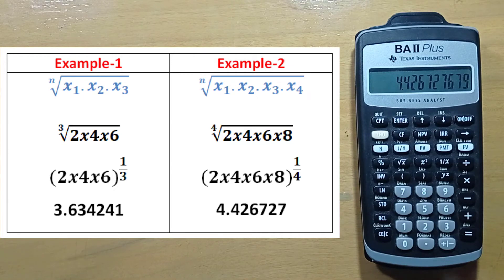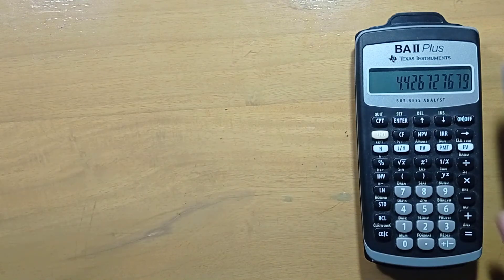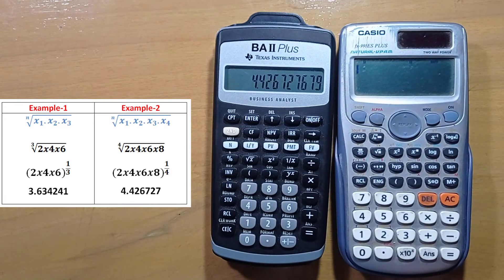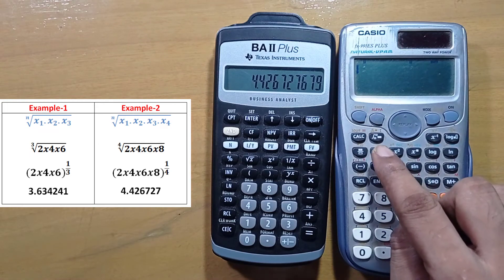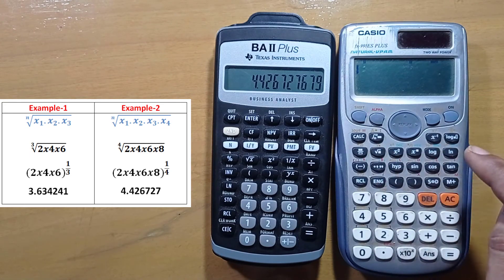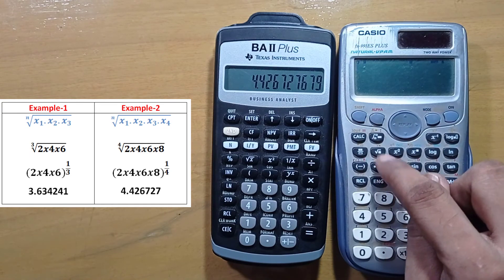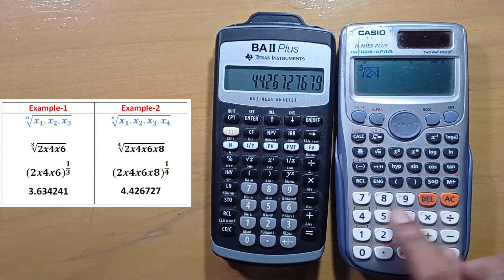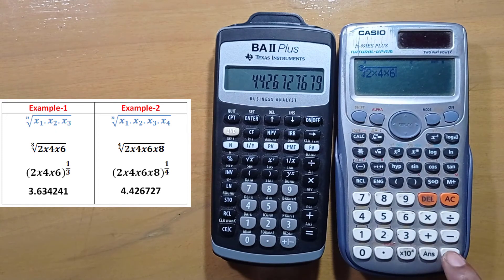It is relatively easy to calculate geometric mean using scientific calculator. If I show you in scientific calculator, see the first one can be calculated as first press shift, then this root sign, and 2 into 4 into 6, equal. So we have the same result.